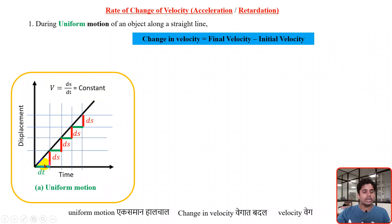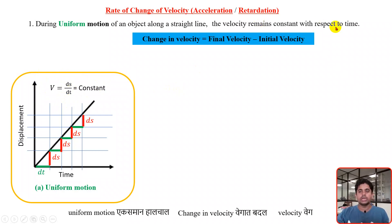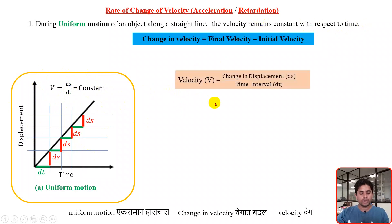For any time interval — 1, 2, 3, or 4 — the value of the ratio ds by dt is constant, meaning velocity is constant. So the velocity remains constant with respect to time for uniform motion.